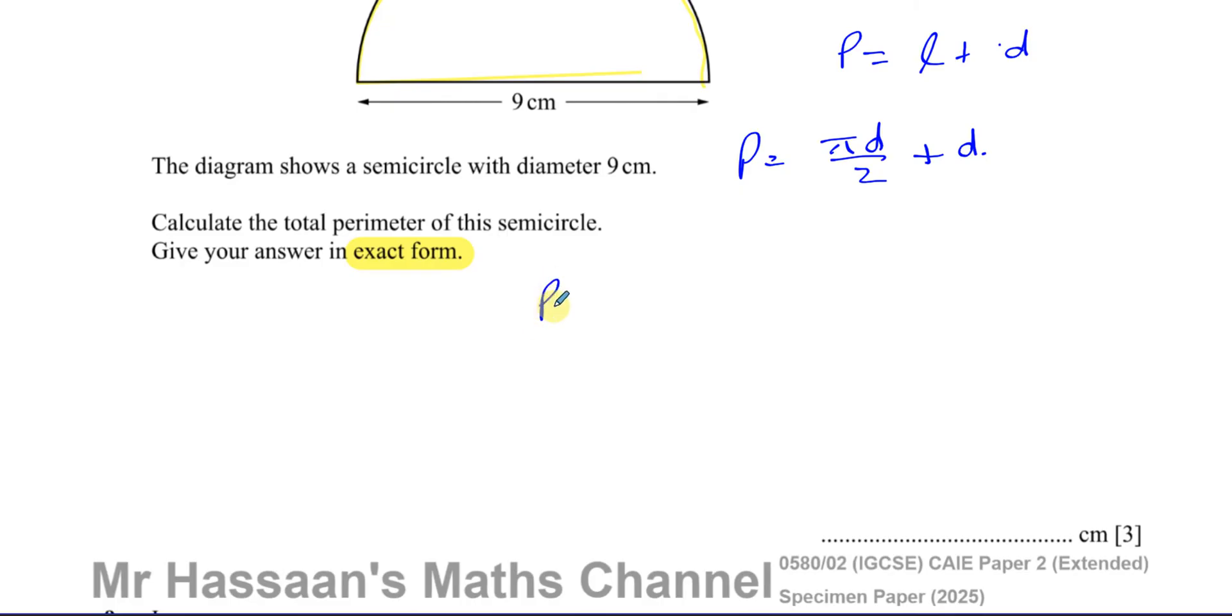So what we're going to do now is say the perimeter is equal to π times 9 over 2 plus 9. And 9 over 2 is 4.5, we could leave it like this, we could say 9 over 2 π plus 9, we could put 4.5π plus 9, both of them are fine.